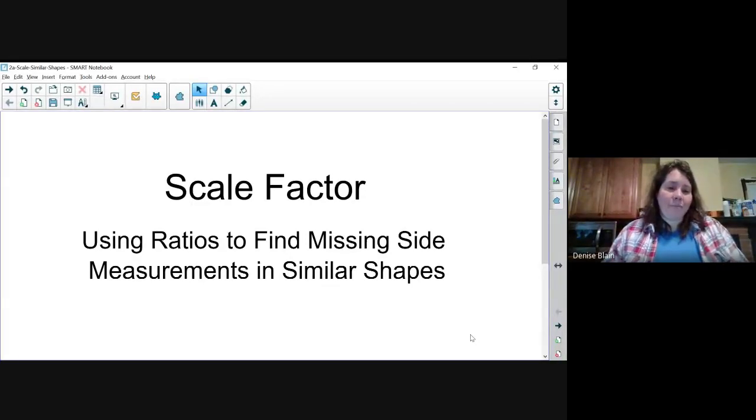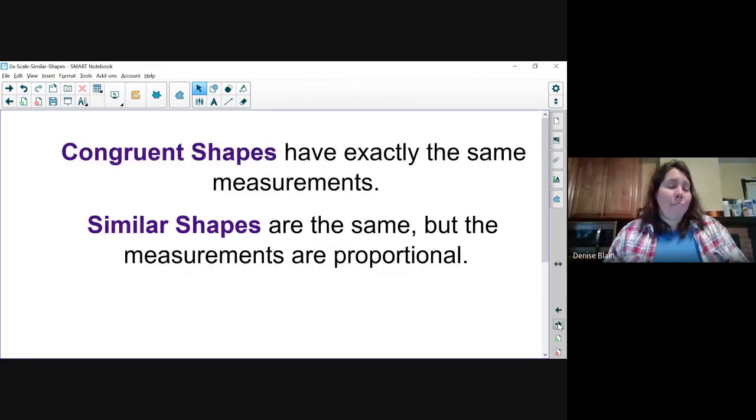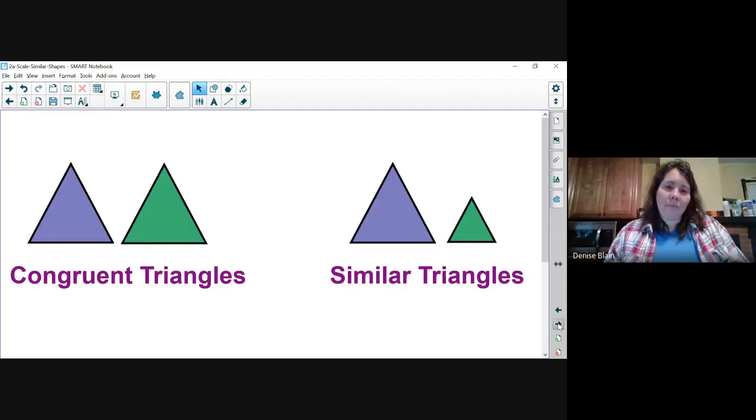Scale factor: using ratios to find missing side measurements in similar shapes. Congruent shapes have exactly the same measurements, while similar shapes are the same but their measurements are proportional. Here we have a pair of congruent triangles.